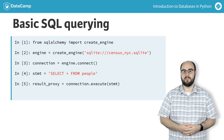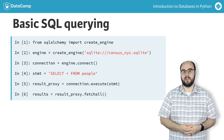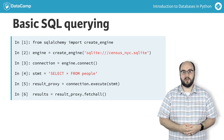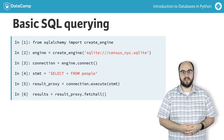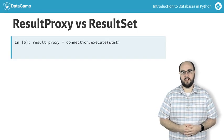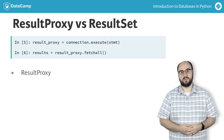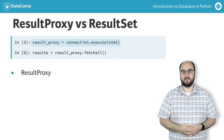Then we can tell resultsProxy to fetch all of the results via the fetchAll method. Now results will contain all of the data from our people table. Let's pause for a moment and look at the object that the execute method gave us. That object is called a resultProxy and can be used in a variety of different ways to get the data returned by our query.